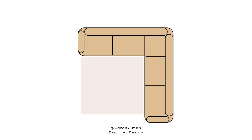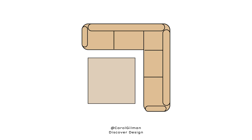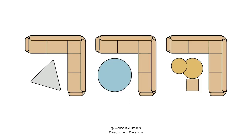For an L-shaped sectional where both sides are the same length, looking down from a bird's-eye view you'll see a natural square shape waiting to be filled. A square coffee table works perfectly here, but other shapes that fit within a square also work well — like a circle, a triangle, or a grouping of tables arranged to fill that square zone.